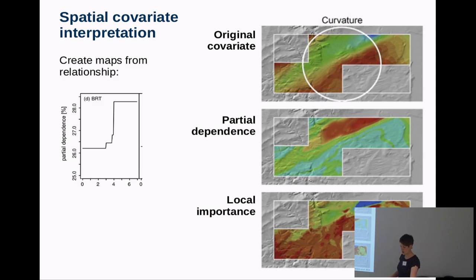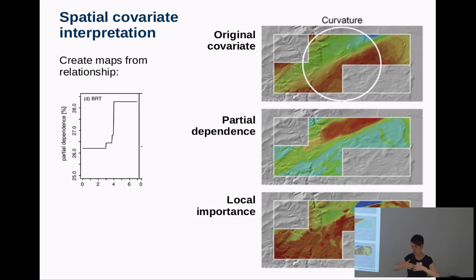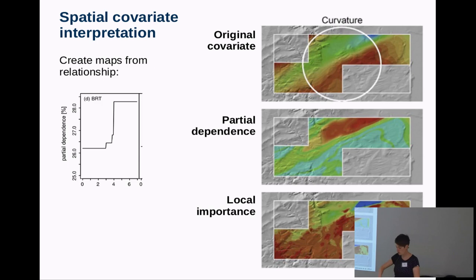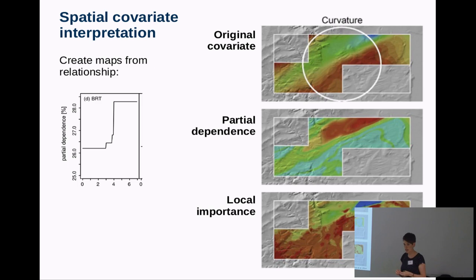Thorsten Behrens does a special type of terrain analysis: he computes elevation differences at different distances on very long scales and puts that into random forest, which can easily deal with very many covariates. This saves the computation of curvature or topographic indices like the wetness index, which are quite computationally intense. I made some tests with these covariates — he calls it 'conmap' — and they were somewhat replacing the traditional terrain attributes. But interpretation of all these things is very difficult. Curvature is much easier to interpret, so I would rather stick with tradition.